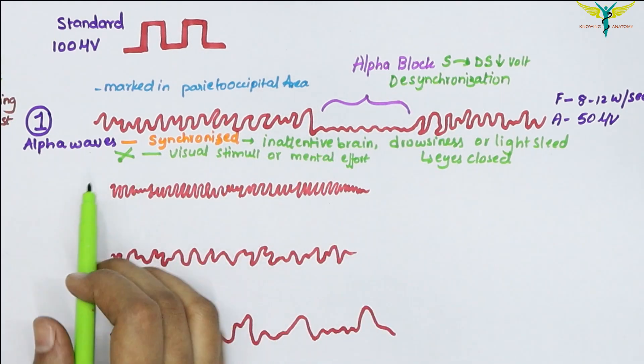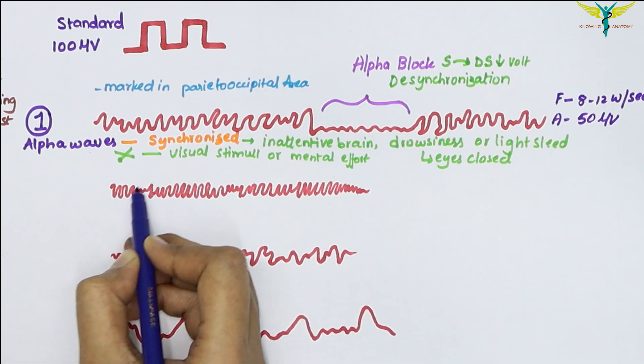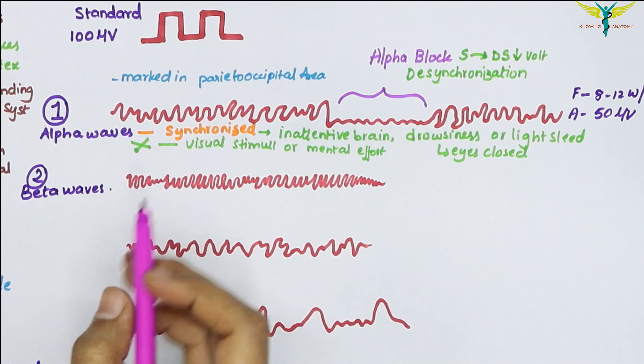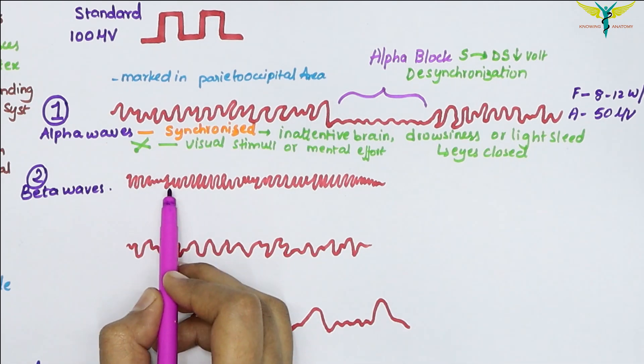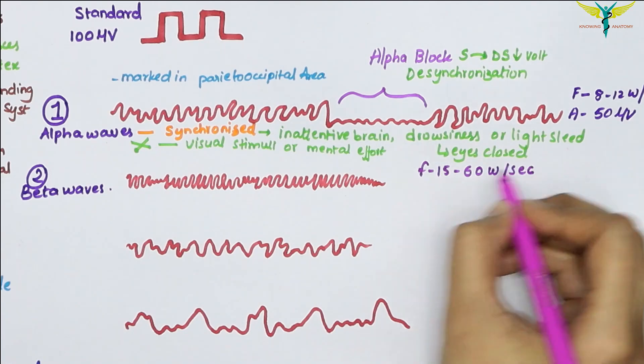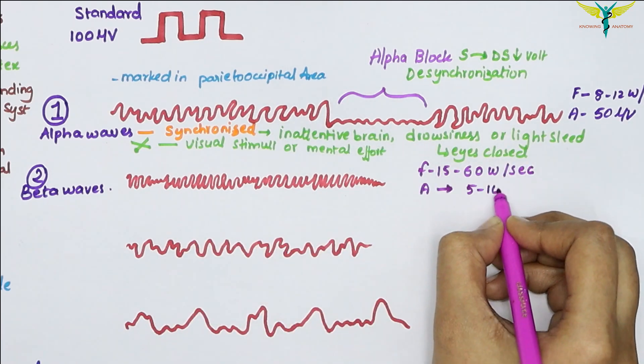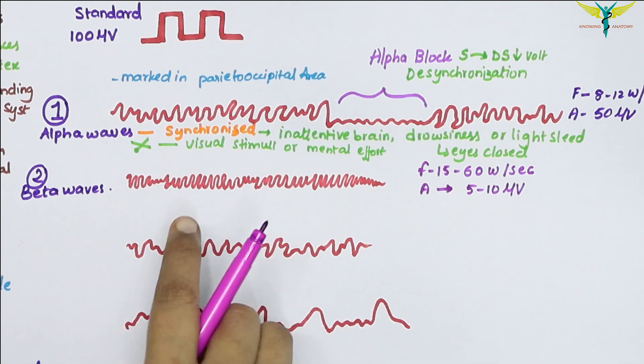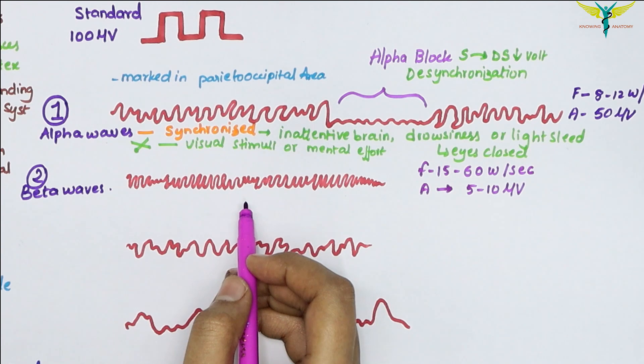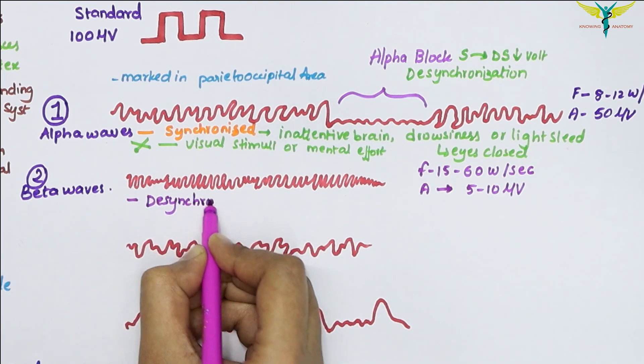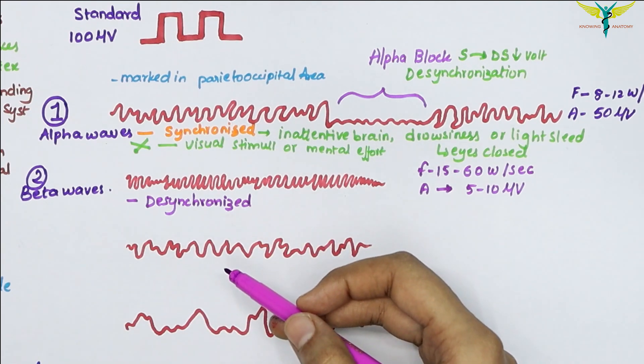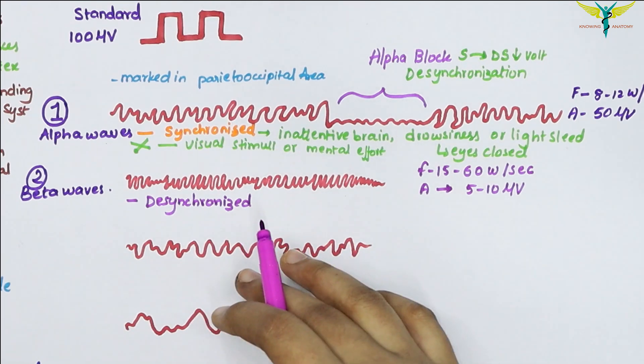Now let's come to the beta rhythm or beta waves. These are the beta waves in an EEG. The beta rhythm includes high frequency waves, from 15 to 60 waves per second, and the amplitude is very low, from 5 to 10 microvolts. The beta waves are desynchronized waves, meaning irregular and variant.